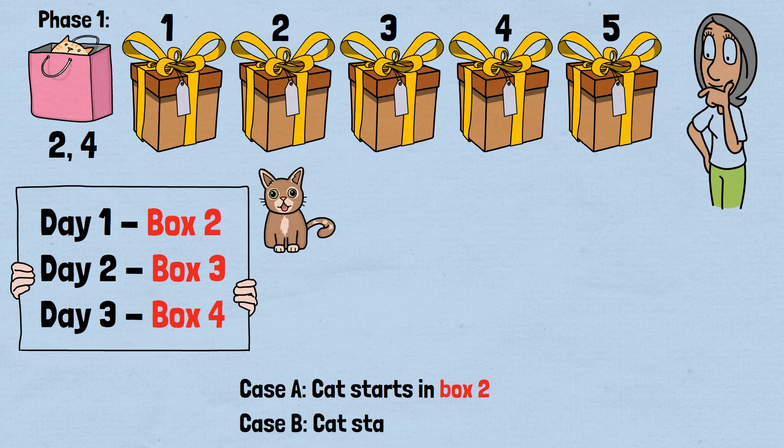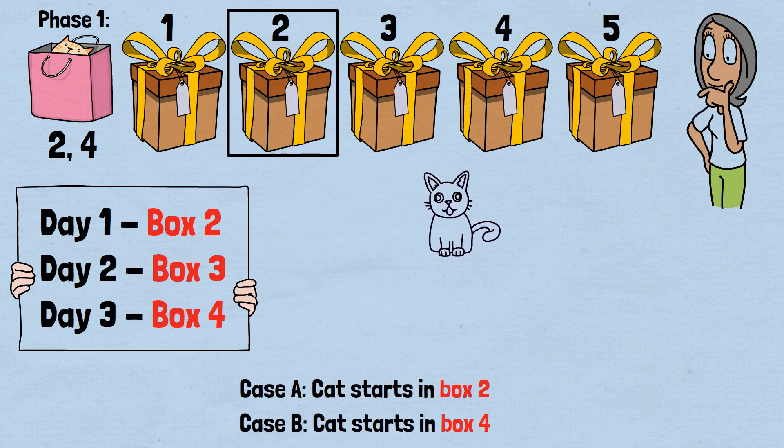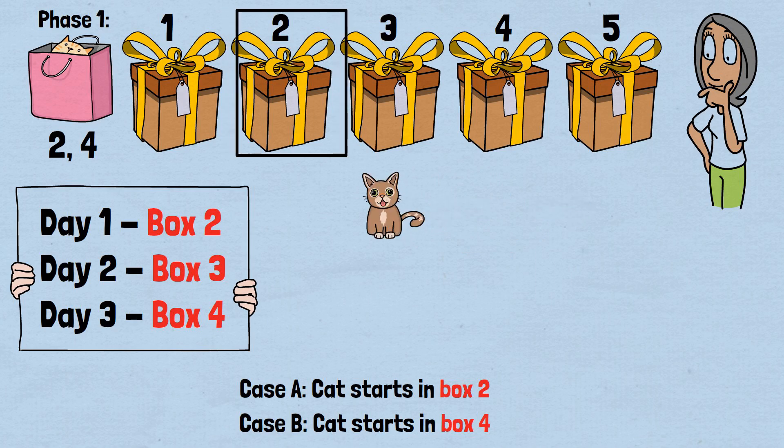Case B: Cat starts in box 4. Day 1: We search box 2. Cat is in box 4. No luck. Night 1: Cat moves from box 4 to either box 3 or box 5. If cat goes to box 3. Day 2: We search box 3. We find the cat.